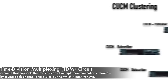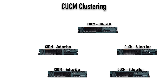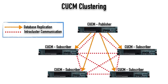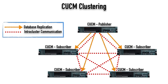A bit more about clustering: with a cluster of five servers, one is designated as the publisher server, which holds a read-write copy of the database. The other servers are subscriber servers that receive a read-only copy. When I add a new phone or line, that database update is written to the publisher and then pushed out to the subscribers — that's database replication. There is also intra-cluster communication, indicated by real-time information such as a phone going off-hook. Other servers in the cluster need to know that a directory number is now in use, and that real-time information is communicated through the intra-cluster communication protocol.